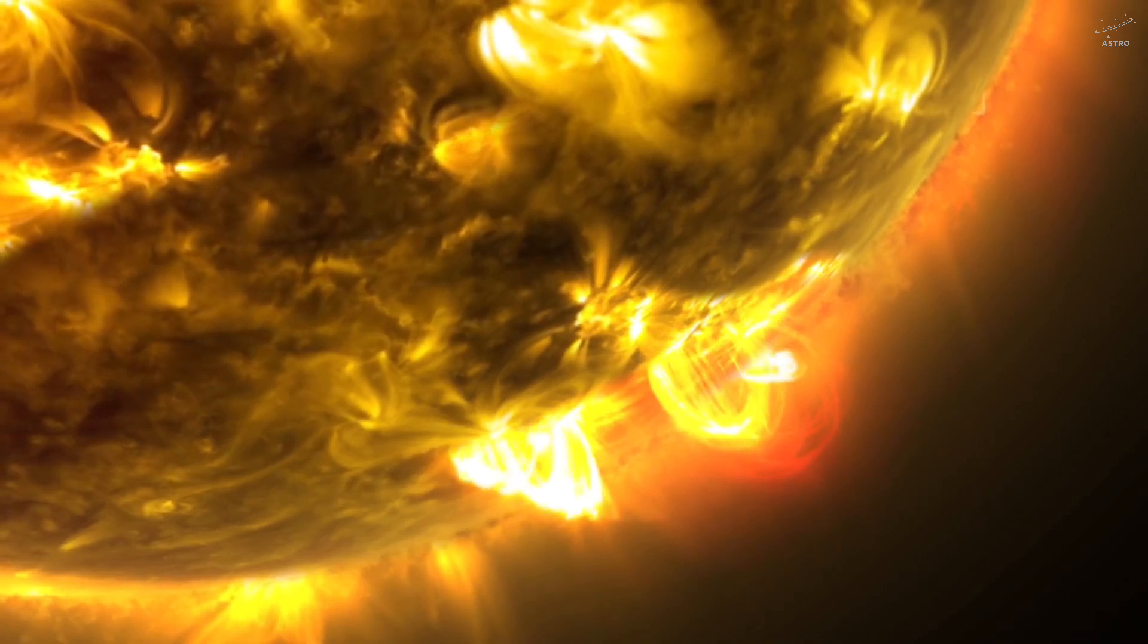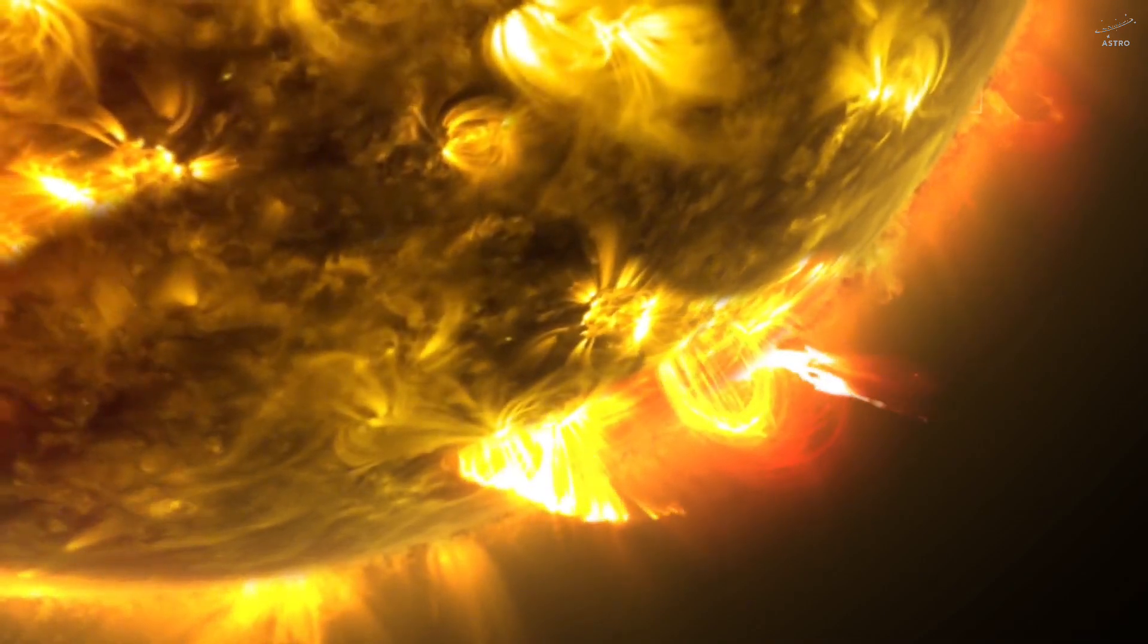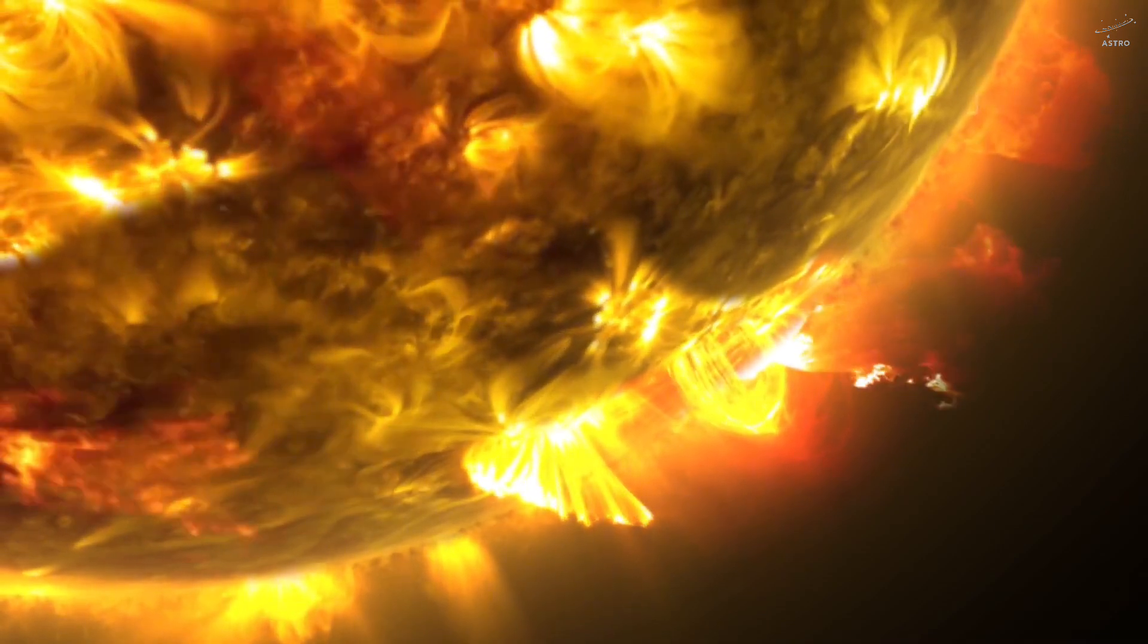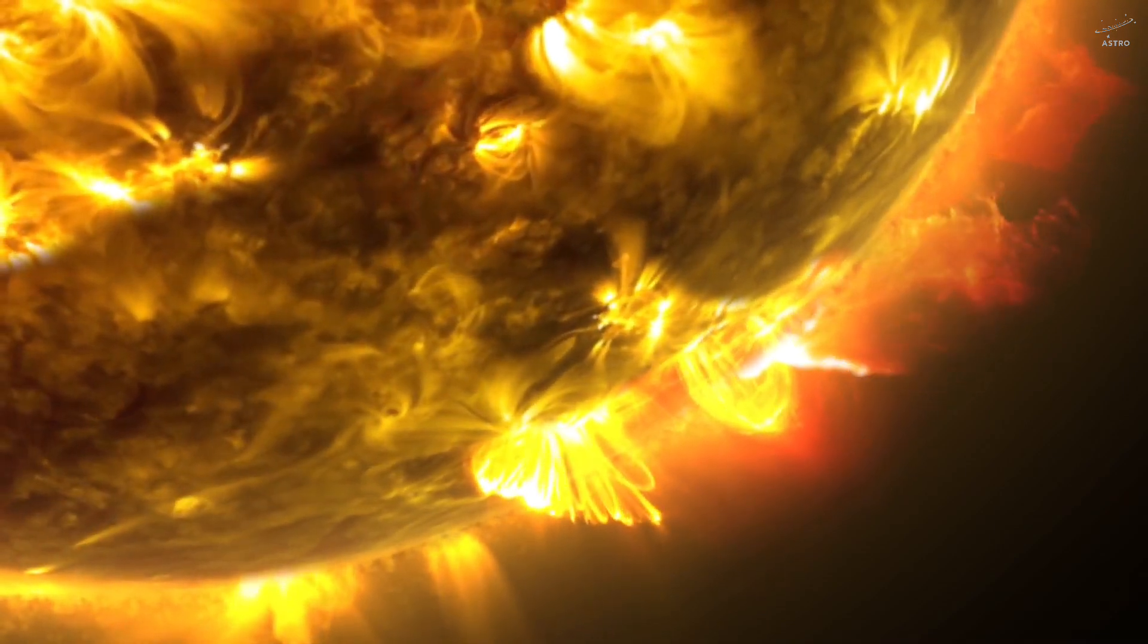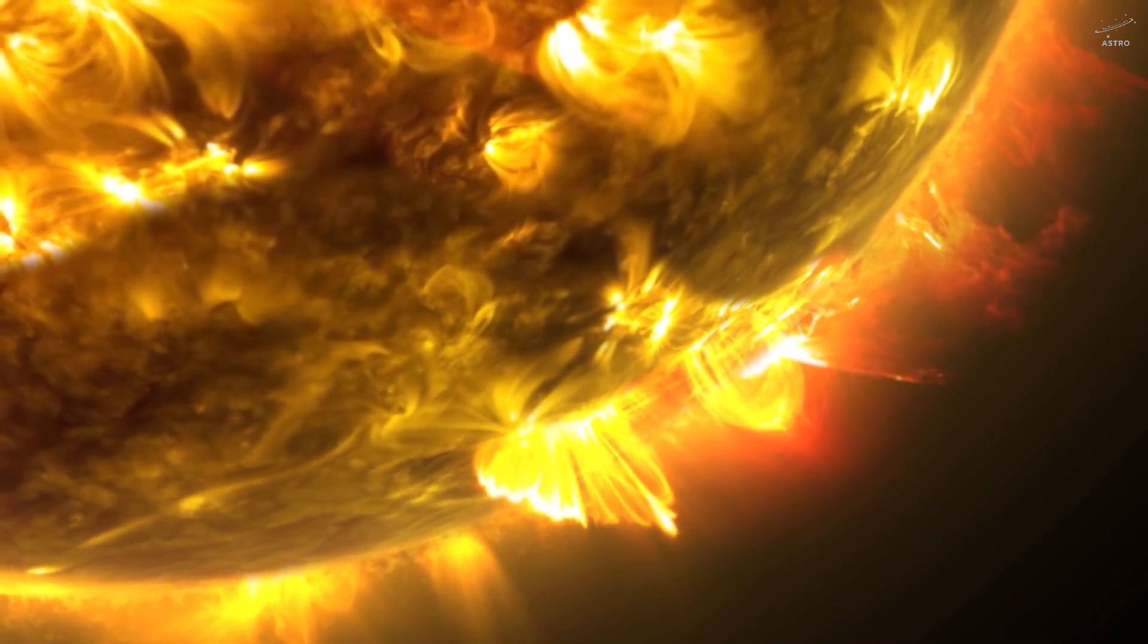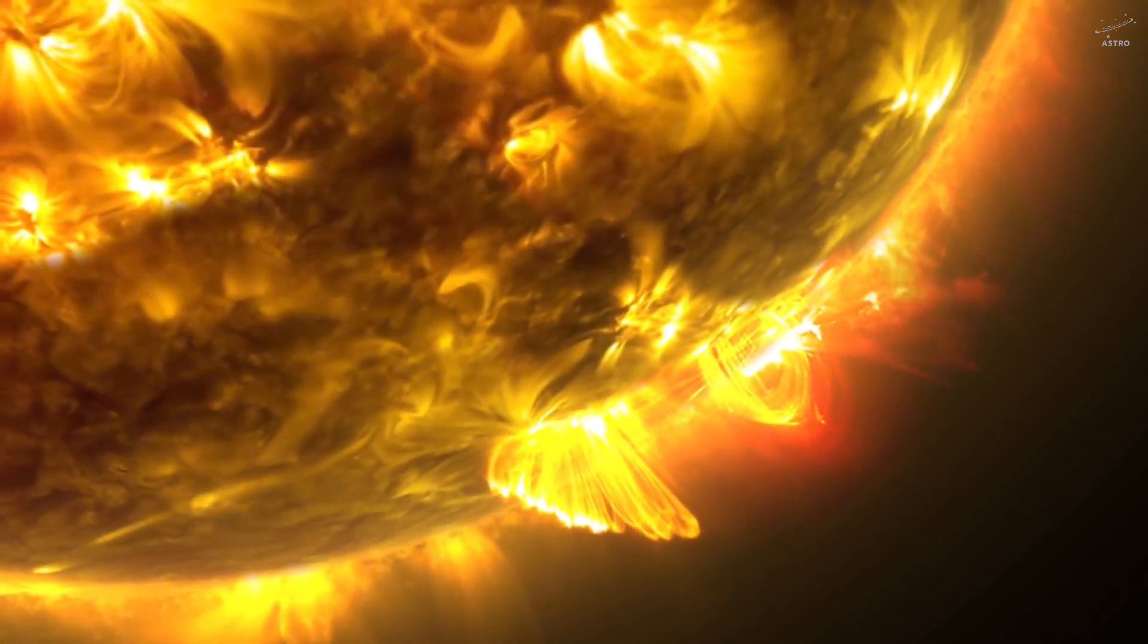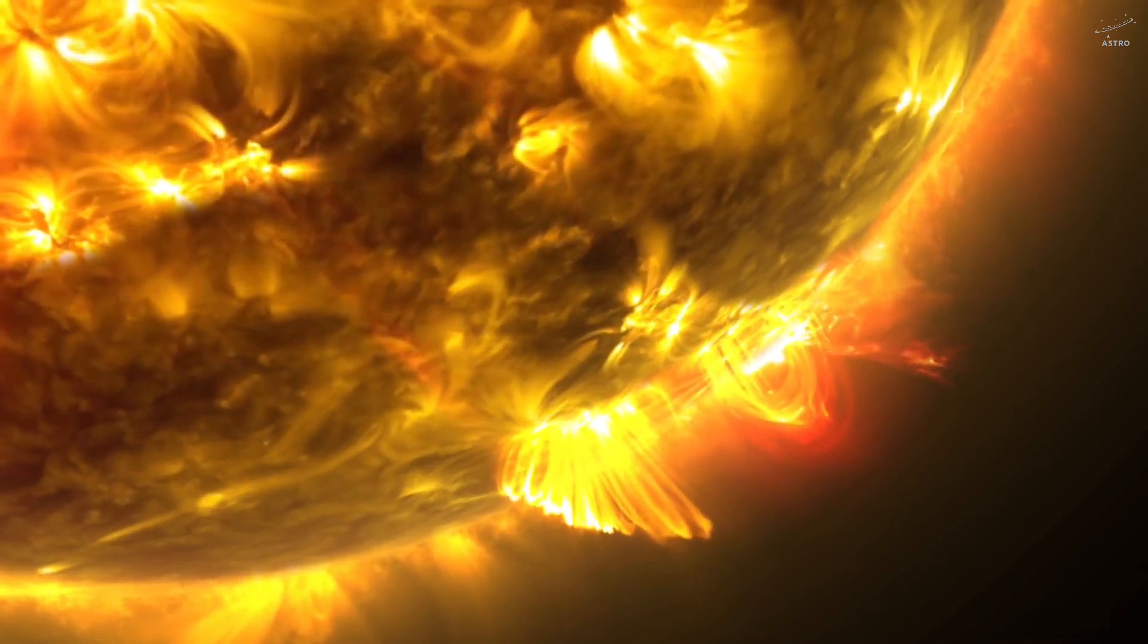Every single second, the sun loses about 4 million tons of mass. That's enough to generate the light, heat, and radiation that sustain life here on Earth. Stretch that across just one day, and you're talking about the mass equivalent of dozens of Earth's tallest mountains. Gone.